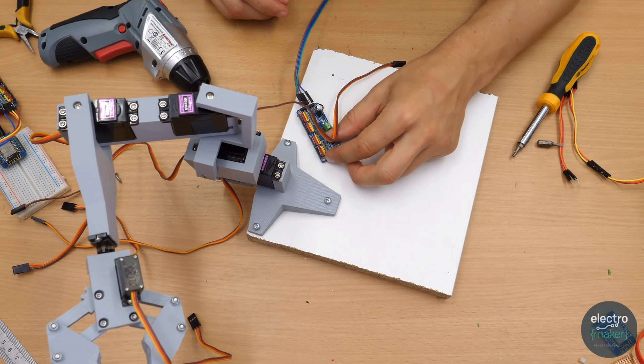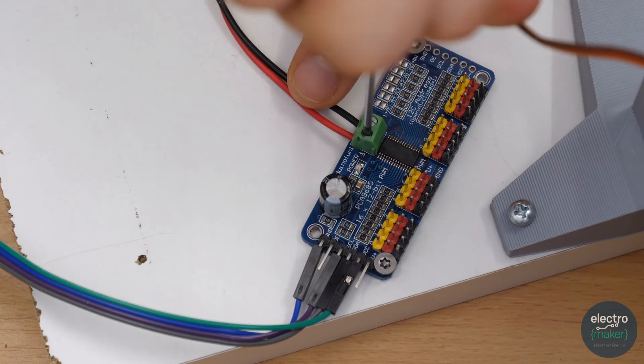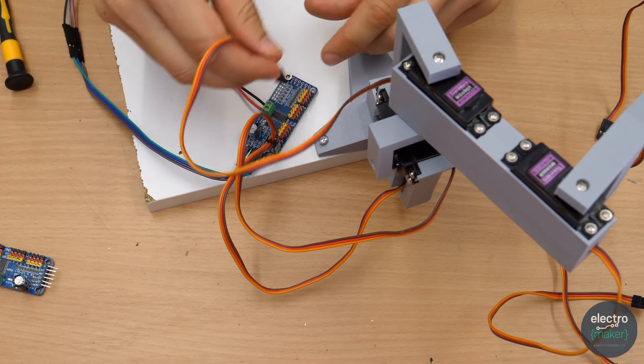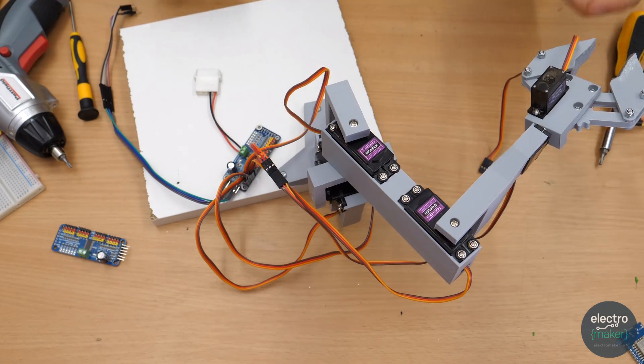I placed a PWM board close by, attached the power connector and connected the servos starting from the shoulder. Some jumper wire helped to extend the servo connections which were too short.